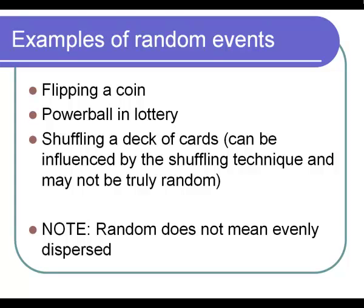For example, flipping a coin. You know you're going to get a head or a tail, but you cannot predict what's going to happen, so that's a random event. If you play the lottery, you know what numbers could possibly be drawn, but you cannot predict which numbers will be drawn, therefore that's a random event.